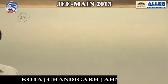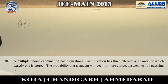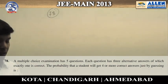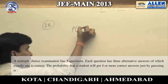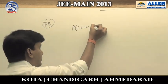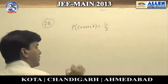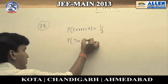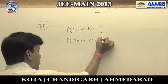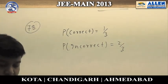Question 78 is a simple probability question. A multiple-choice examination has five questions, and each question has three alternatives. The student is guessing, so the probability that his answer is correct is one-third, since there are three options, and the probability that his answer is incorrect is two-thirds.